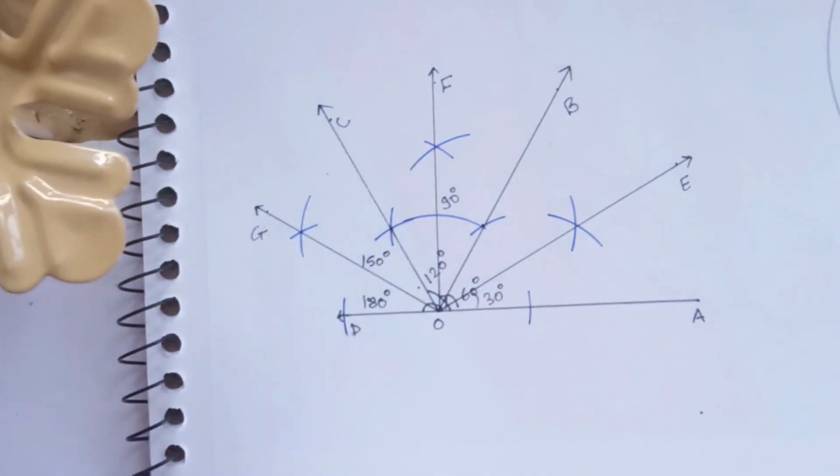So in this way we have drawn angles of 30 degrees, 60 degrees, 90 degrees, 120 degrees, 150 degrees, and finally 180 degrees with the help of just a compass and scale. In this way we get a complete range of 0 to 180 degree angles, the major angles.